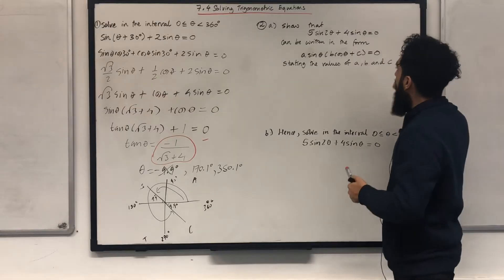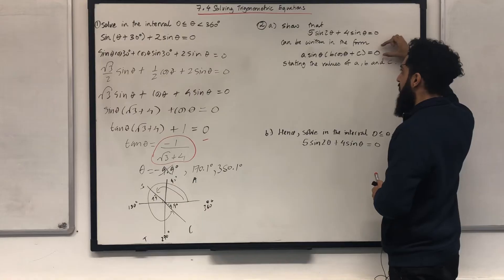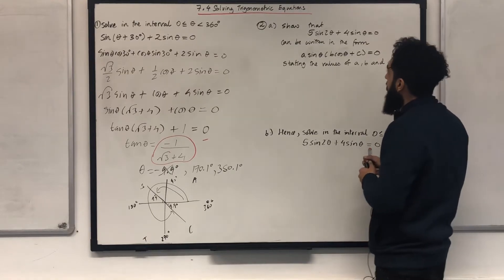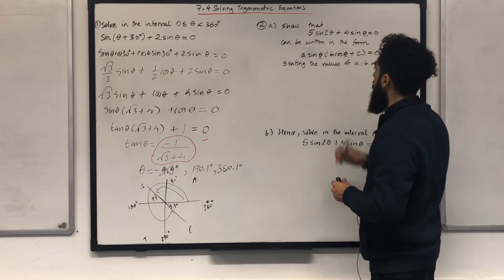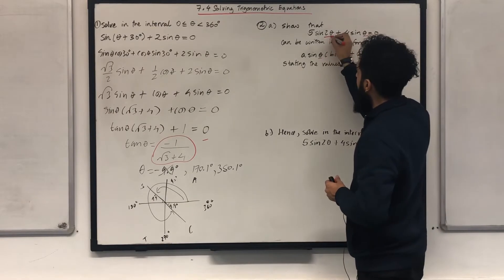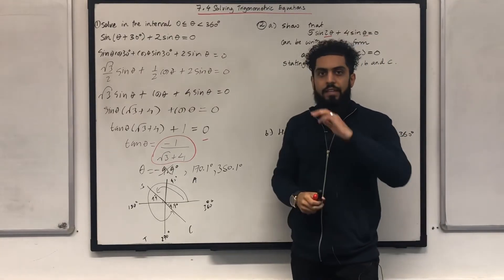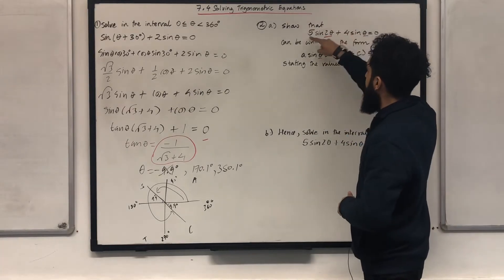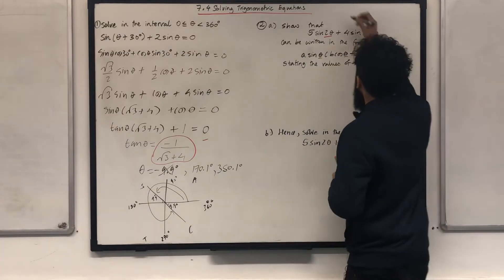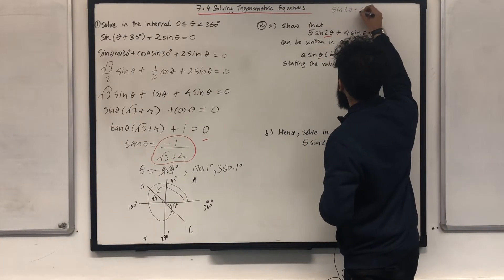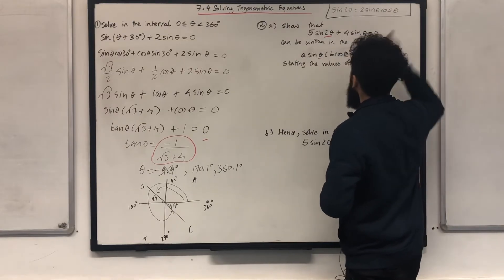What I need to do is start off with this particular equation and manipulate it until I get the target form. I've got two theta here, but the target form only has theta. So I need to eliminate the two theta using the double angle formula for sine: sine 2 theta is equivalent to 2 sine theta cos theta. I'll be using this double angle formula shortly.